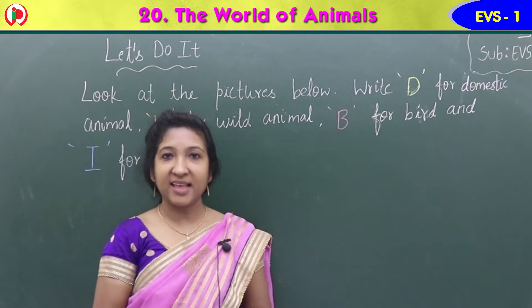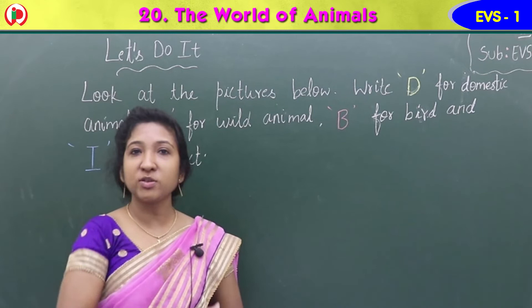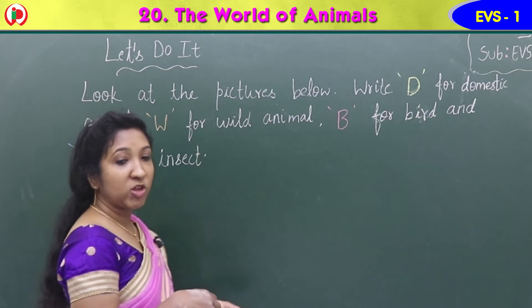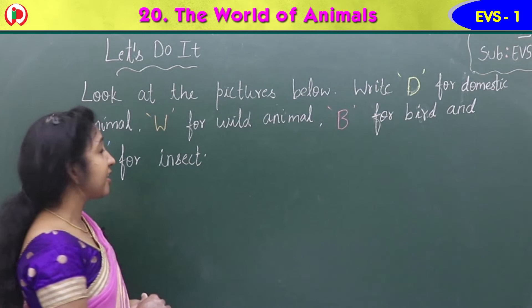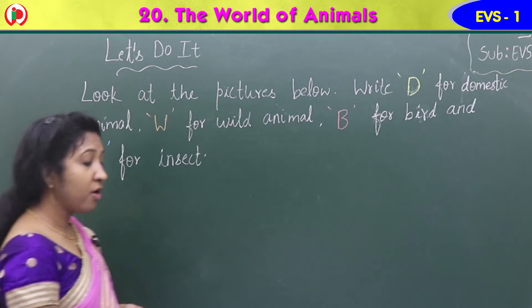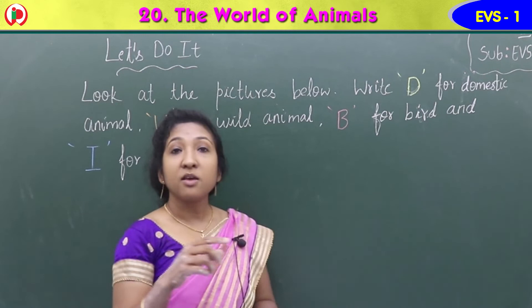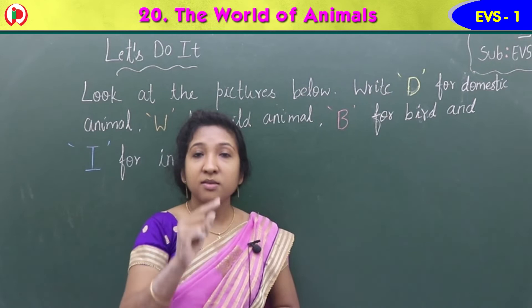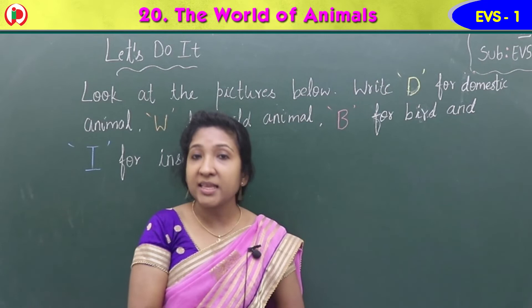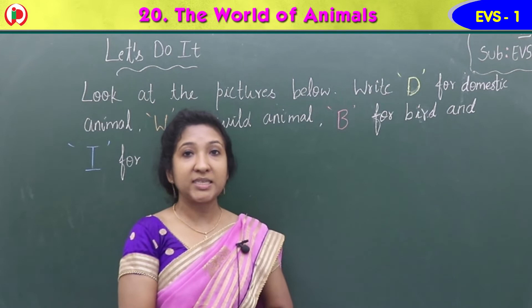Our next exercise in the workbook is 'Let's do it.' Look at the pictures on workbook page 45. Some pictures are given. Write D for domestic animal, W for wild animal, B for bird, and I for insect. You can see the image first — if it is domestic, write D in the square box under each image. Let's start. See the first image.